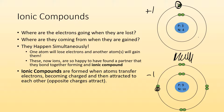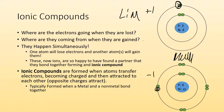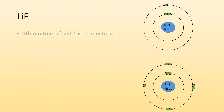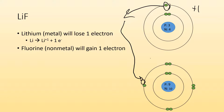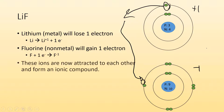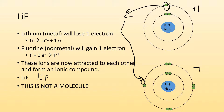Typically ionic bonds form when a metal and a nonmetal bond together. Here we have lithium, which is a metal, and fluorine, which is a nonmetal. When they interact, they tend to form ionic bonds. Lithium is going to lose one electron and becomes plus one. Fluorine gains that electron and becomes minus one. Now they're attracted to each other — that's an ionic compound, that's ionic bonding.